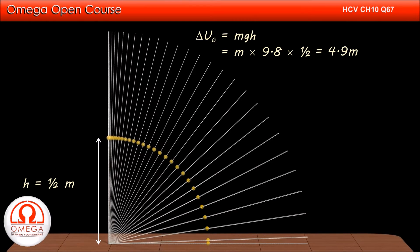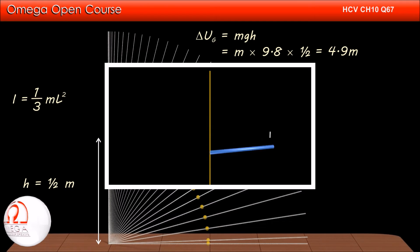This energy must be converted into rotational kinetic energy of the stick. The moment of inertia of a rod about an axis passing through its end is given by 1 by 3 ml square. If you do not know how to calculate this moment of inertia, you may watch our video on calculation of moment of inertia of rod. The link for the video is shown on the screen and given in the description below.